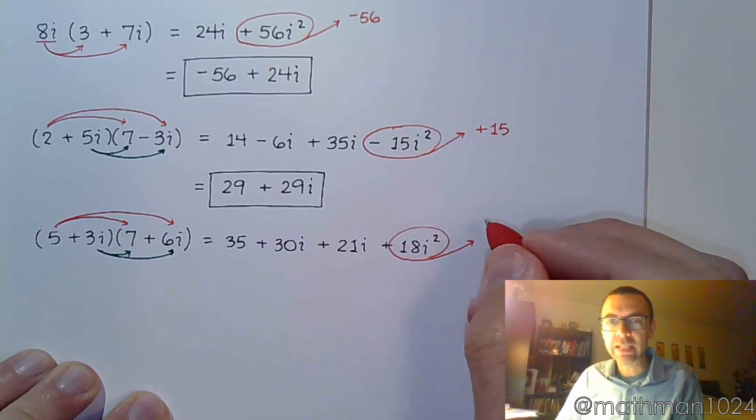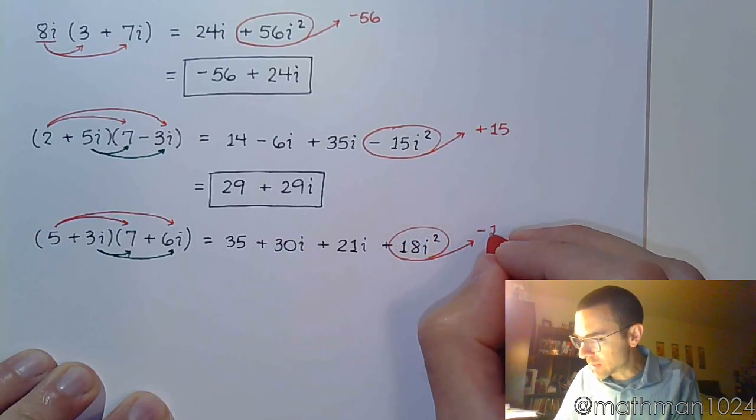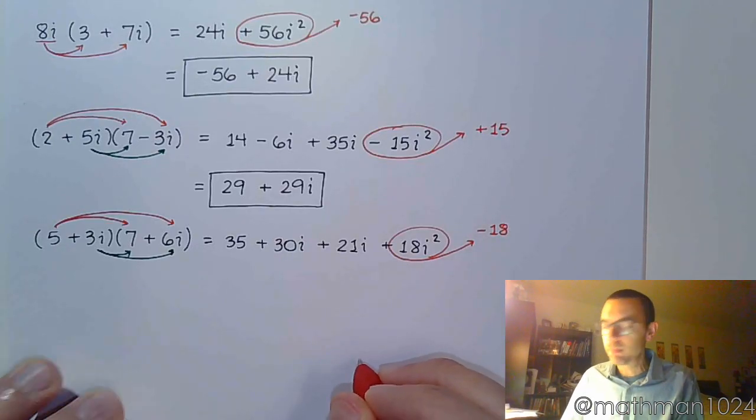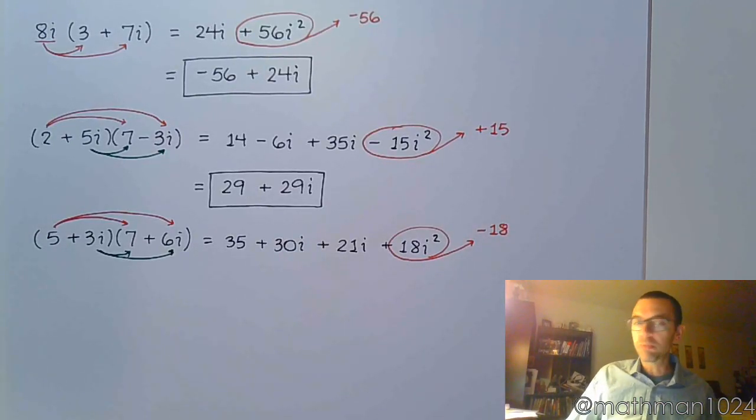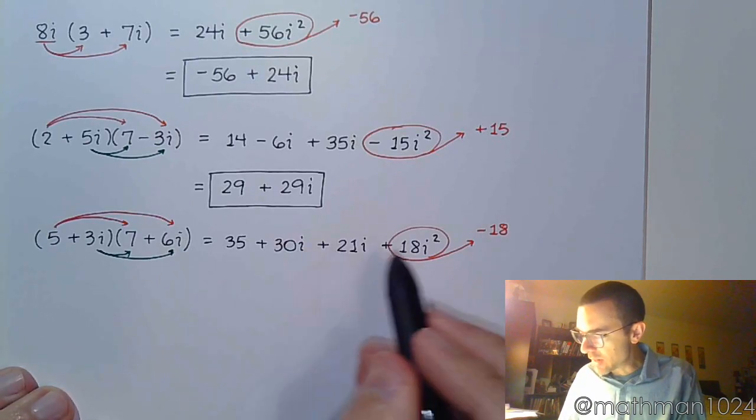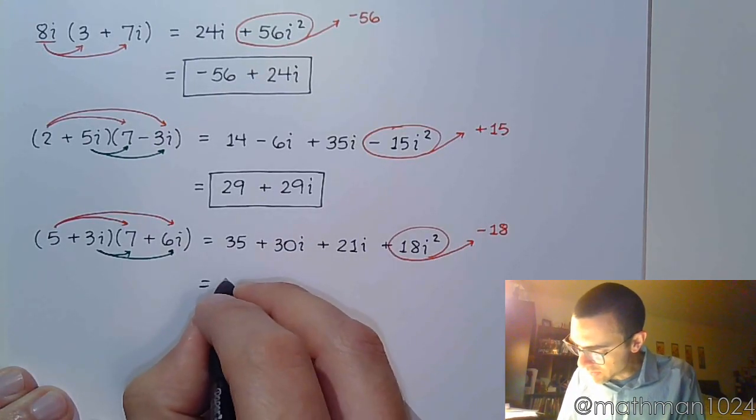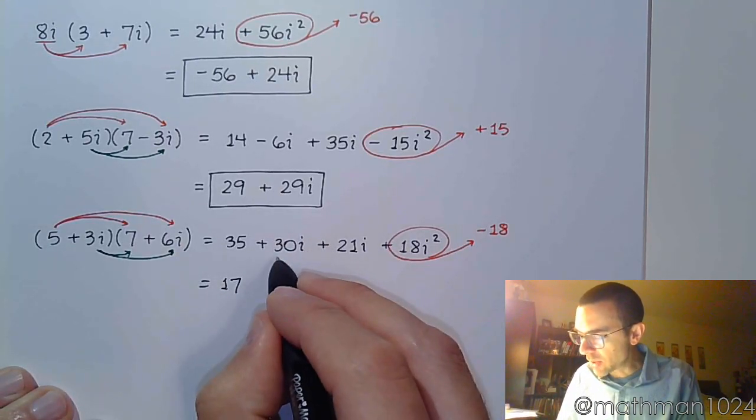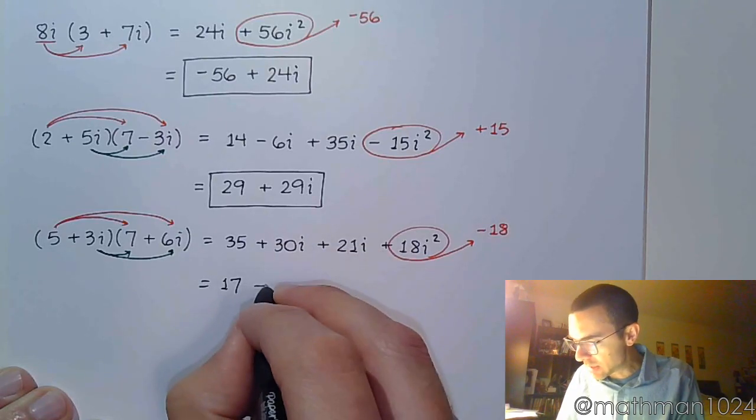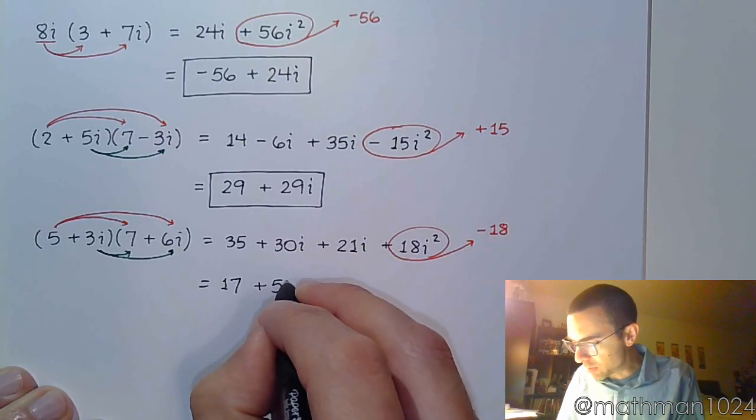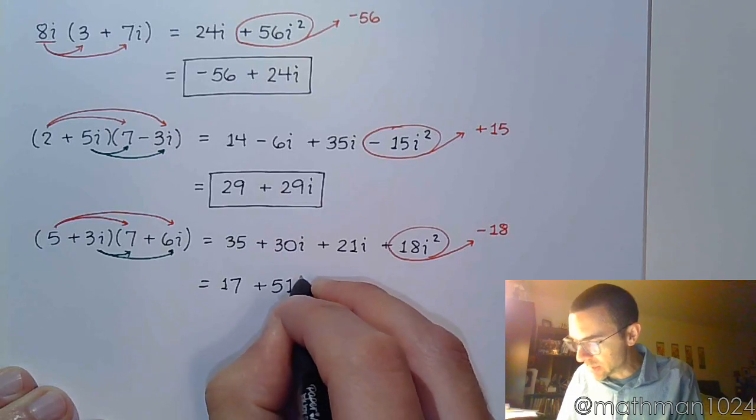And the plus 18i squared gives me minus 18. So now we combine the real stuff first. 35 minus 18 is 17. 30i plus 21i combined to give me 51i.